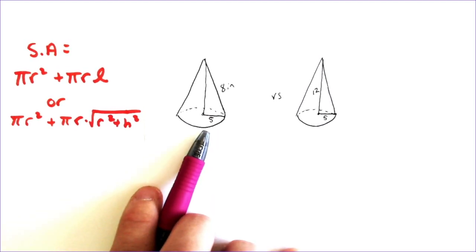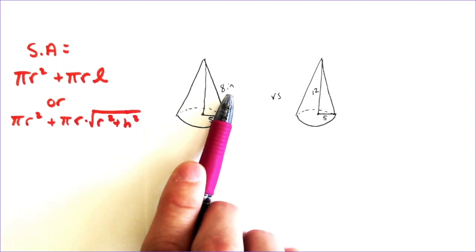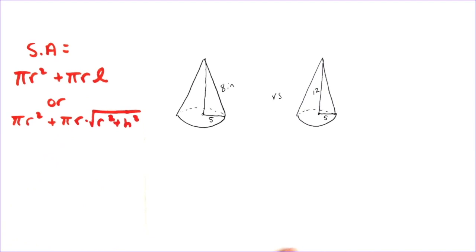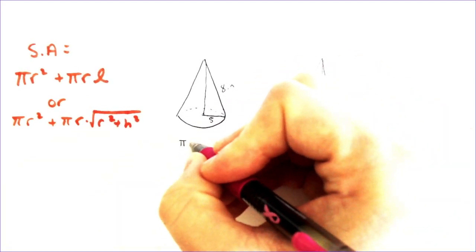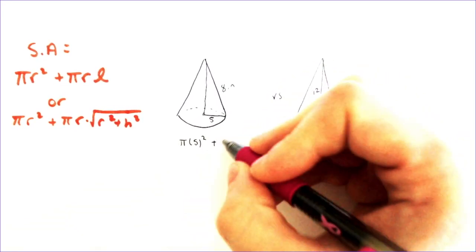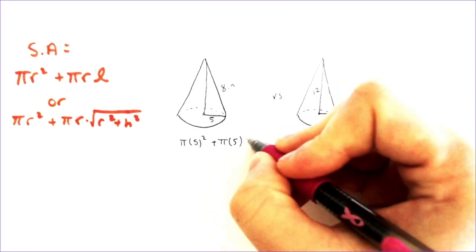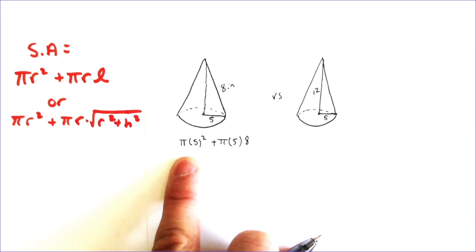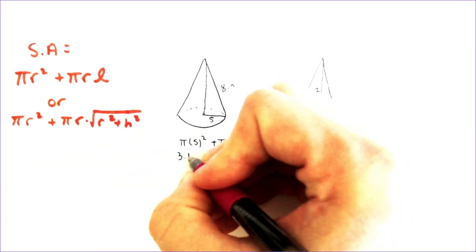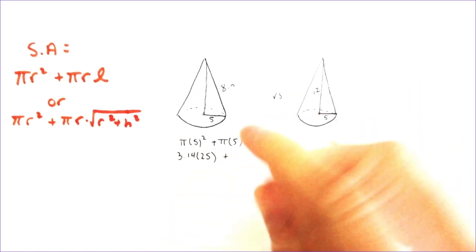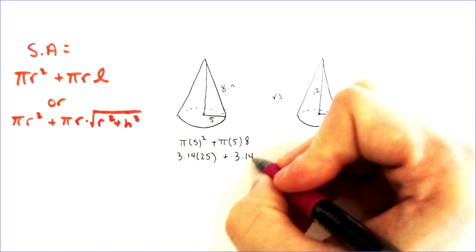In the first problem, the 8 is a slant height, so I will be using the slant height formula and plugging in 8 for L. So I'm going to do that right now: π r² — that would be 5 squared — plus π r L, which is π times 5 times the L, which is 8.